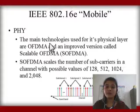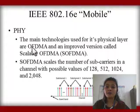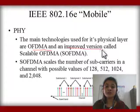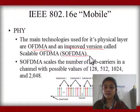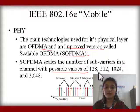The main technologies used in Mobile WiMAX's physical layer are OFDMA, also called 802.16e OFDMA, and S-OFDMA. The S-OFDMA has possible subcarrier values of 128, 512, 1024, and 2048.